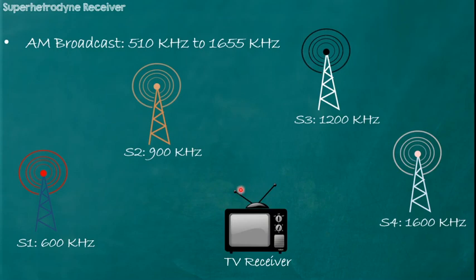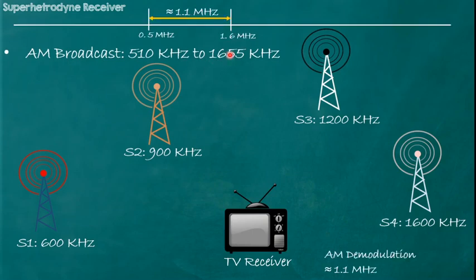If we think about the receiver, it has to demodulate the signal available from all stations. That is, this receiver must be able to demodulate the signal at 600 kHz, 900 kHz, 1200 kHz, and 1600 kHz. In short, this receiver must be able to demodulate the signal over the entire band of frequency, which is from 0.5 MHz to 1.6 MHz — a band of 1.1 MHz. So this receiver must perform AM demodulation over the entire band of 1.1 MHz.